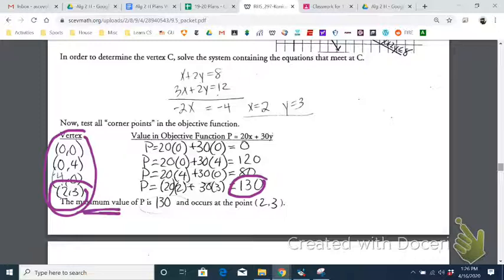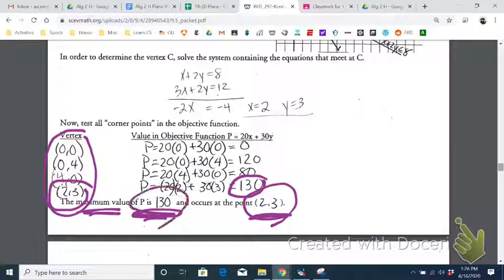So since we were trying to maximize P, our final answer is going to be, the optimal solution for P is 130. That's the biggest it could be. And that occurs when x is 2 and y is 3. And again, these points satisfy all the inequalities, and it also makes P the largest it could be.